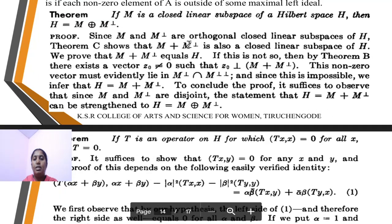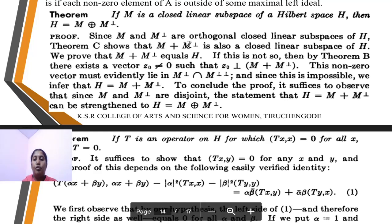Next theorem: if M is a closed linear subspace of Hilbert space H, then H = M ⊕ M⊥. M and M⊥ are orthogonal closed linear subspaces of H. By previous theorem, M⊥ is a closed linear subspace of H. We prove M⊥⊥ = H, and by theorem it is M + M⊥. The proof is concluded since M and M̄ are disjoined. Hence the theorem is proved.